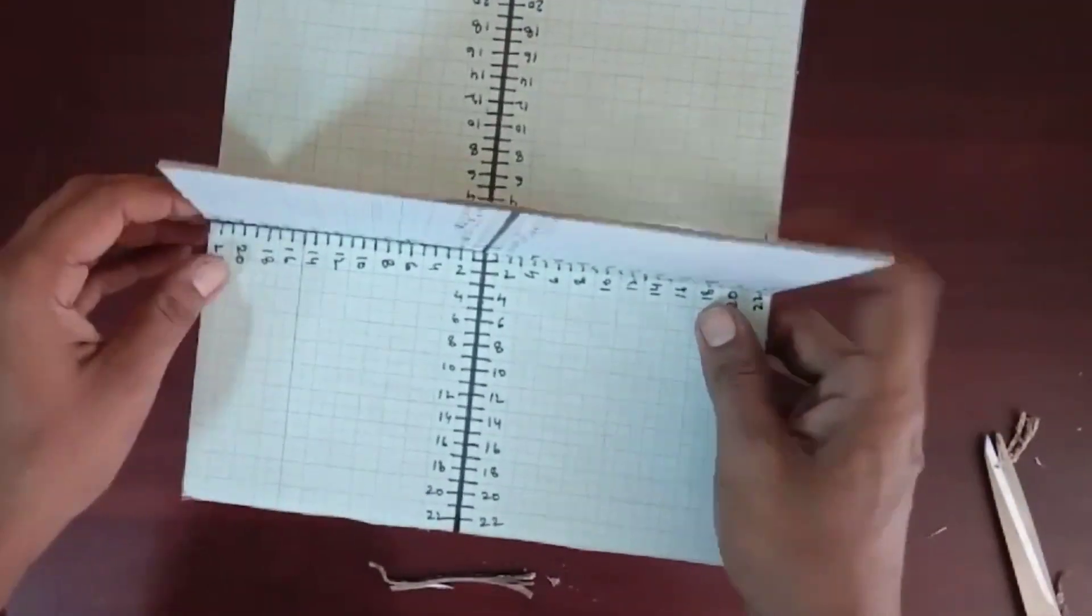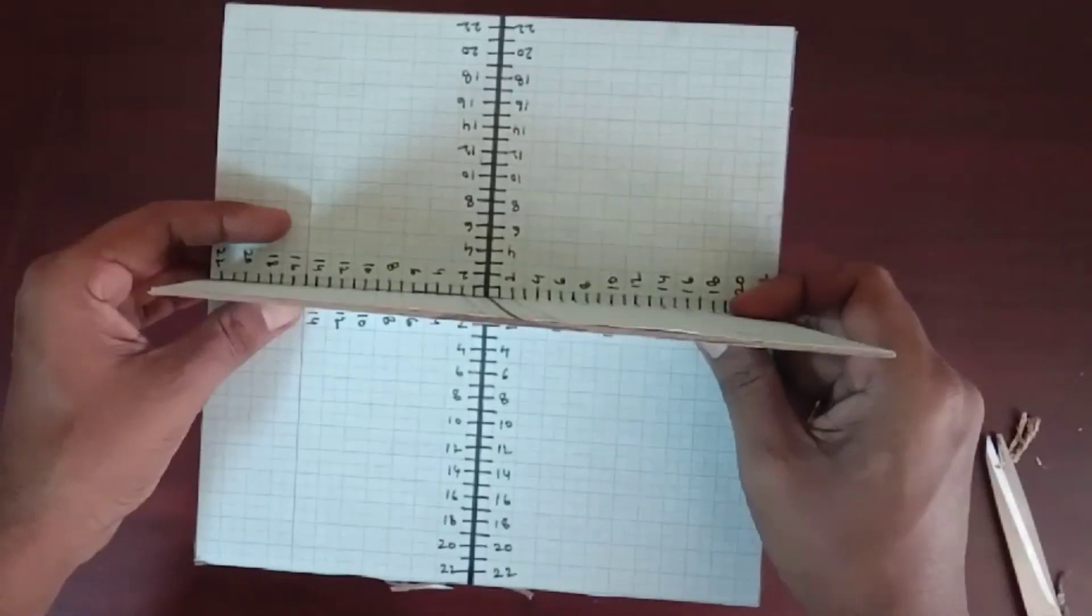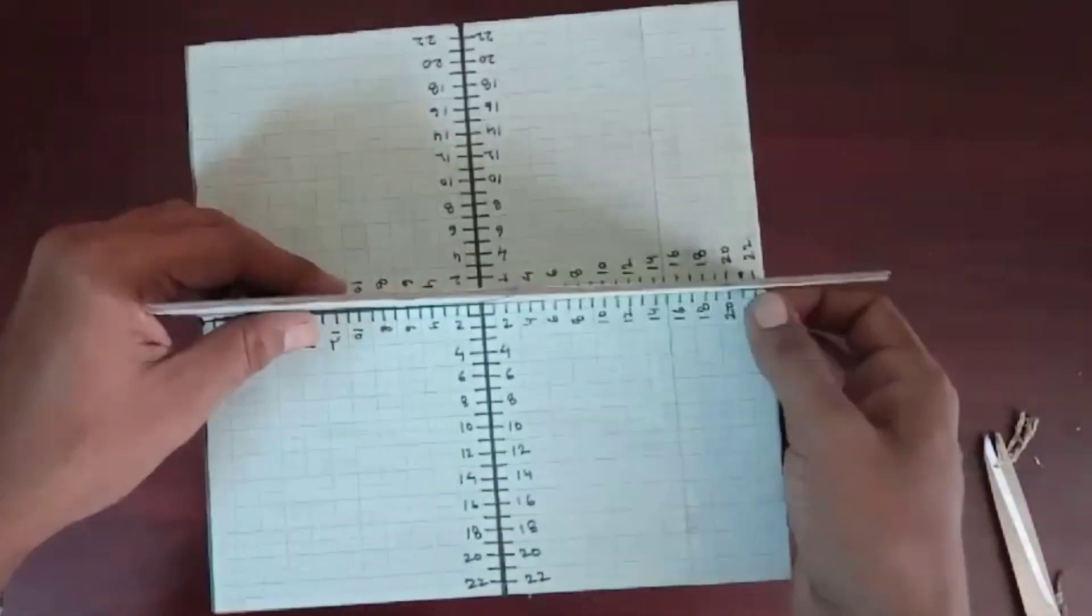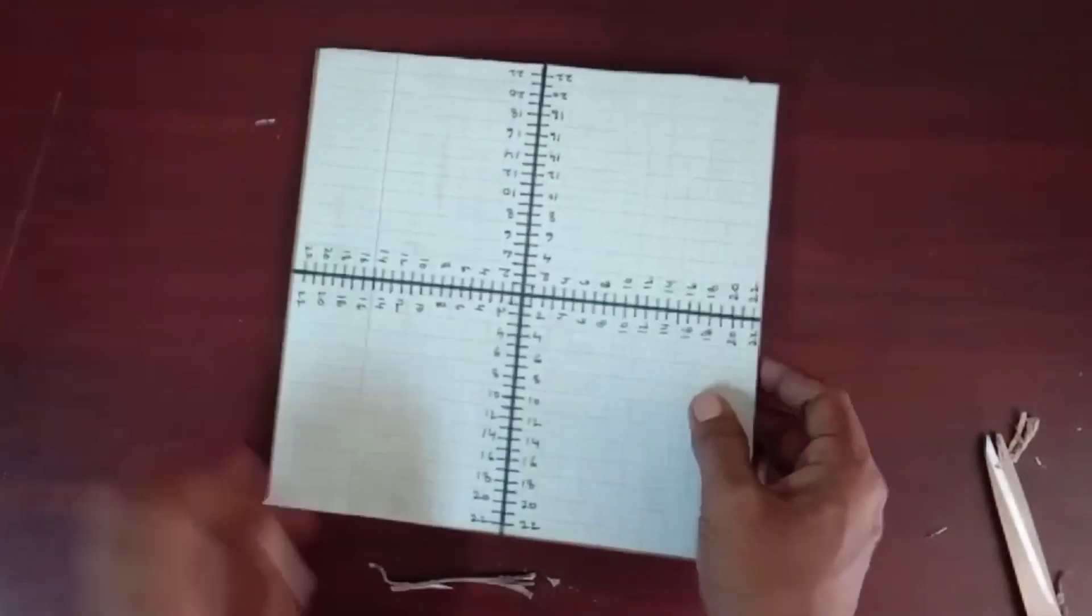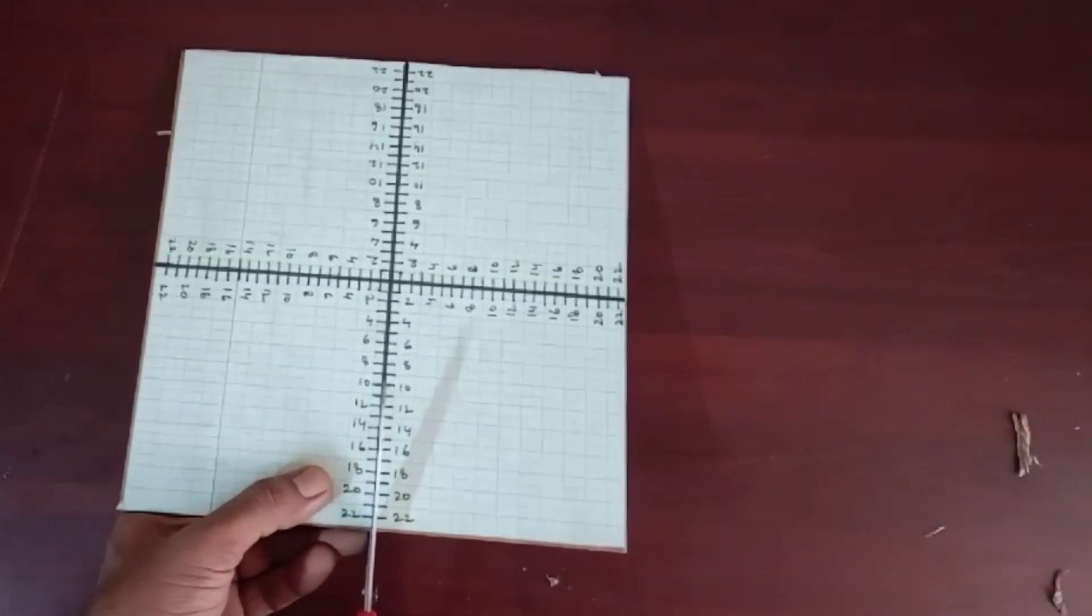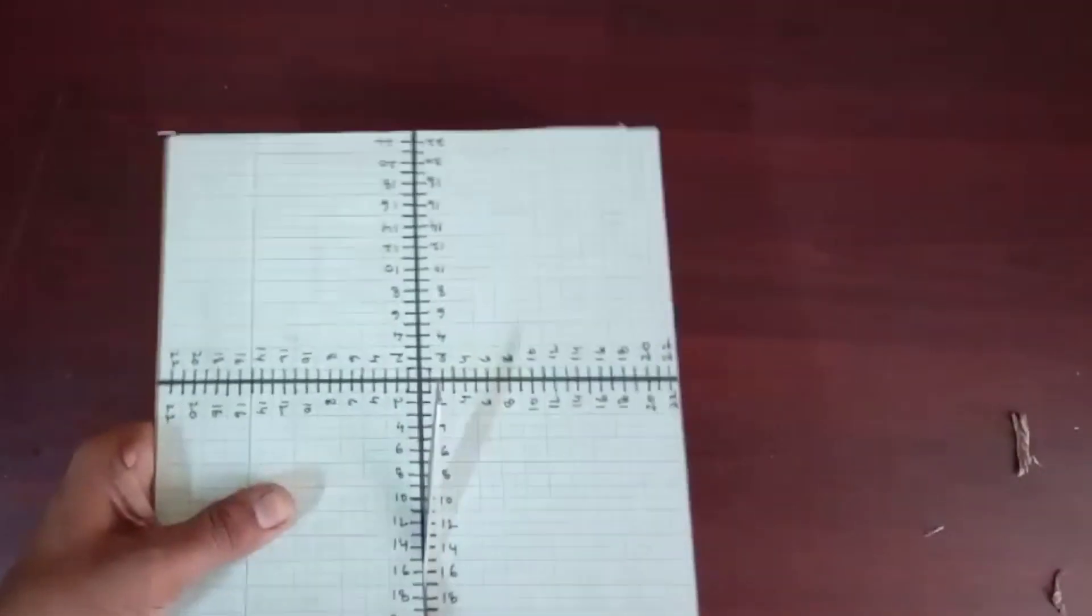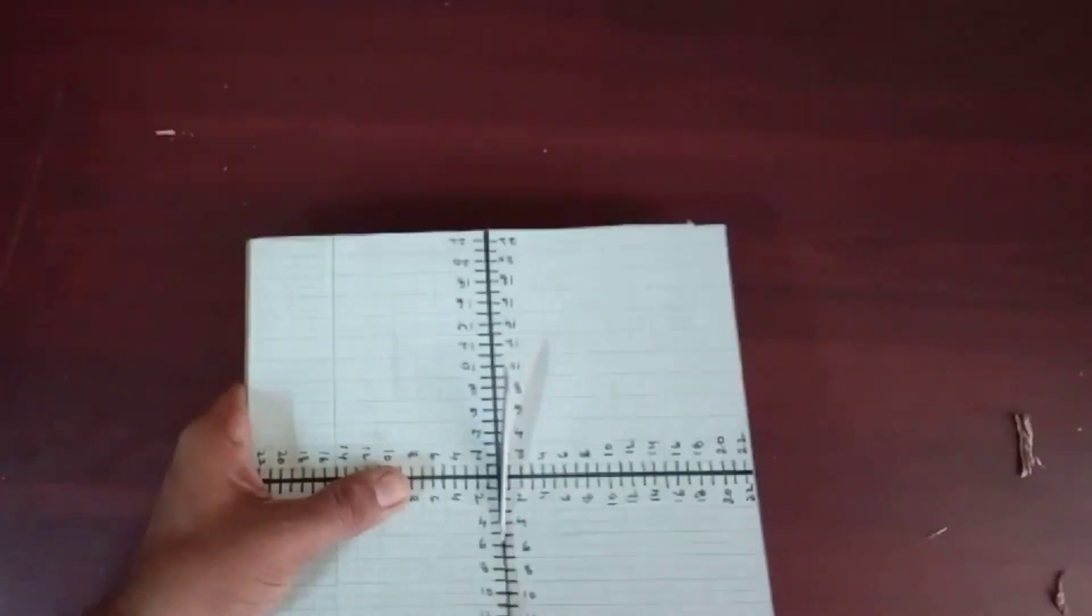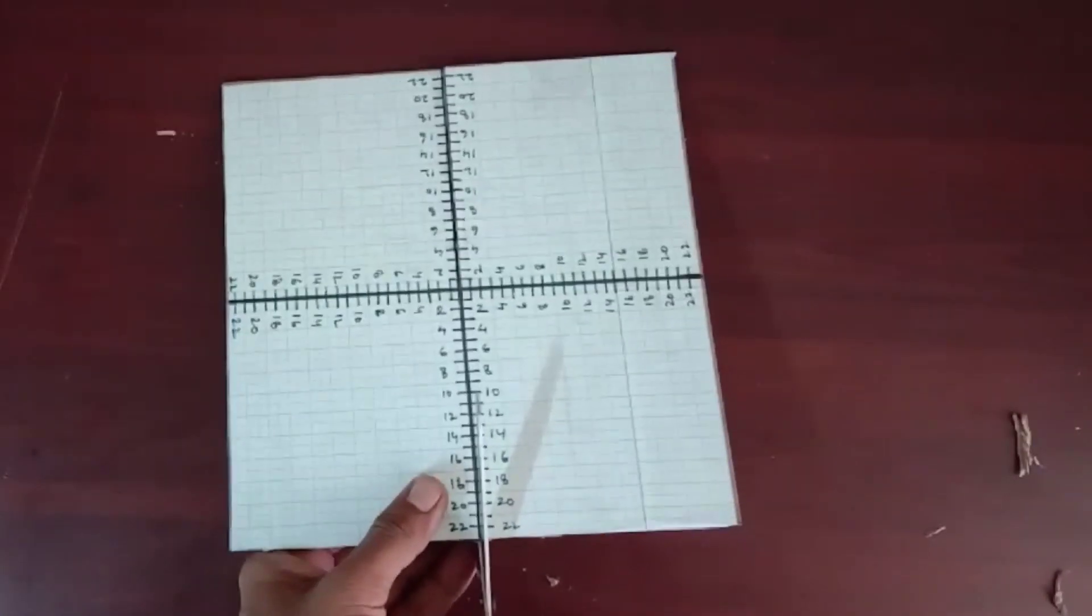Now insert both cardboards into one another. Now you can see one cardboard is perpendicular to the other cardboard. Now take the third cardboard and divide it into two parts along its axis.